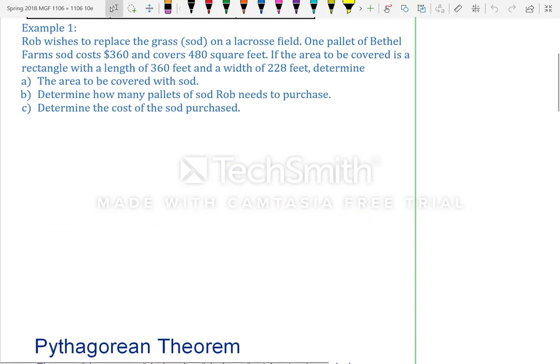Example 1. Rob wishes to replace the grass sod on a lacrosse field. One pallet of Bethel Farms sod costs $360 and covers 480 square feet. If the area to be covered is a rectangle with a length of 360 feet and a width of 228 feet, determine the area to be covered with sod, determine how many pallets of sod Rob needs to purchase, and determine the cost of the sod purchased.